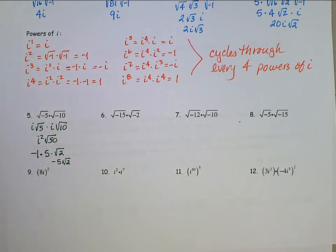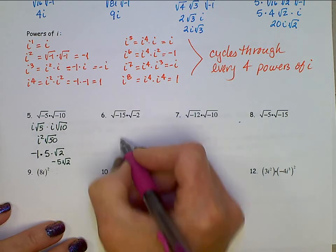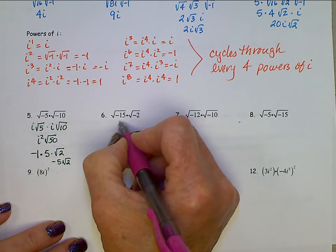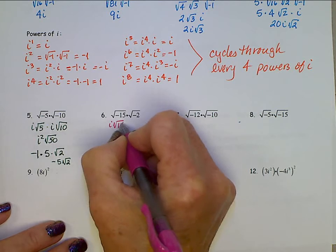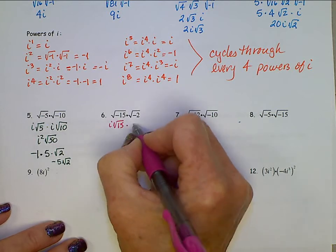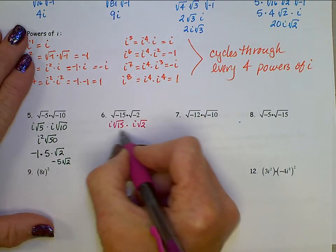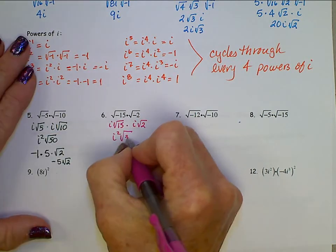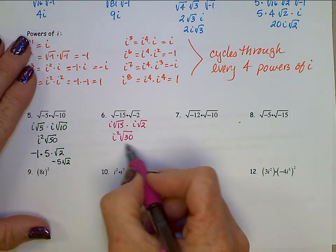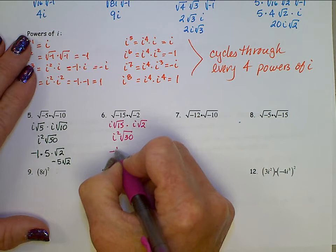For square root of negative 15 times square root of negative 2: we can think of this as square root 15 times i, multiplied by i times square root 2. Multiplying the outsides gives us i squared, and multiplying the insides gives square root of 30. Square root of 30 does not break down — there's no perfect square that divides into 30. But i squared is negative 1, so we have negative square root 30.